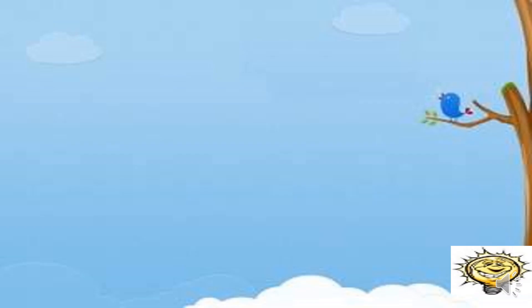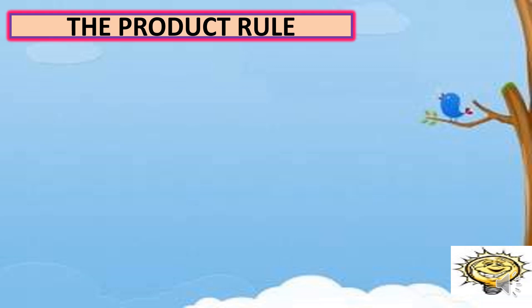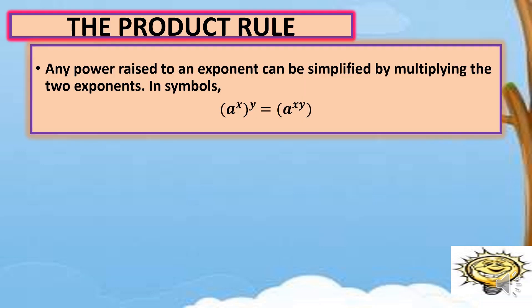So the first law is about the product rule. By definition, any power raised to an exponent can be simplified by multiplying the two exponents. So in symbols, we have quantity a raised to x raised to y, and that is equal to a raised to x times y. So let's have some examples.